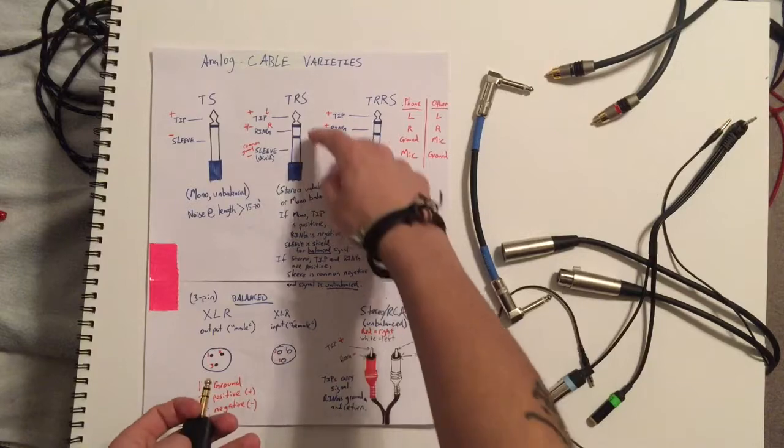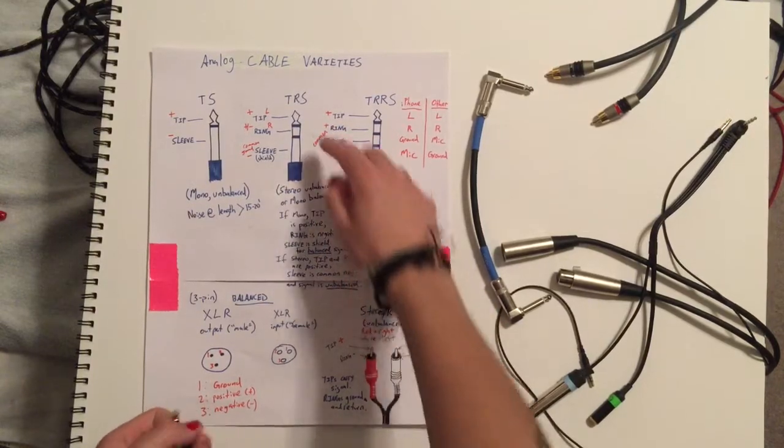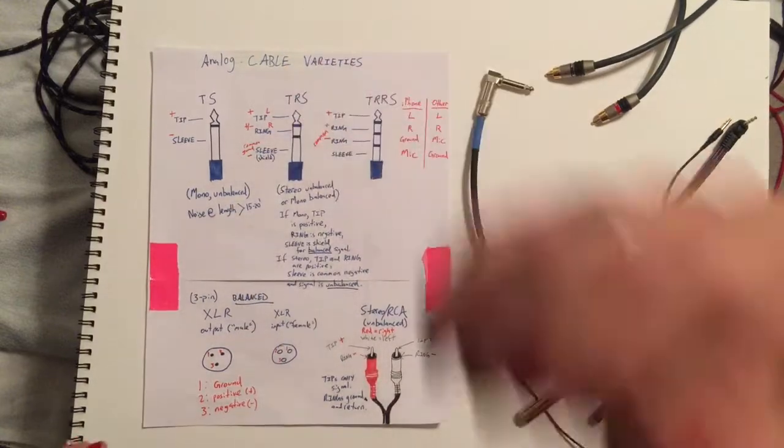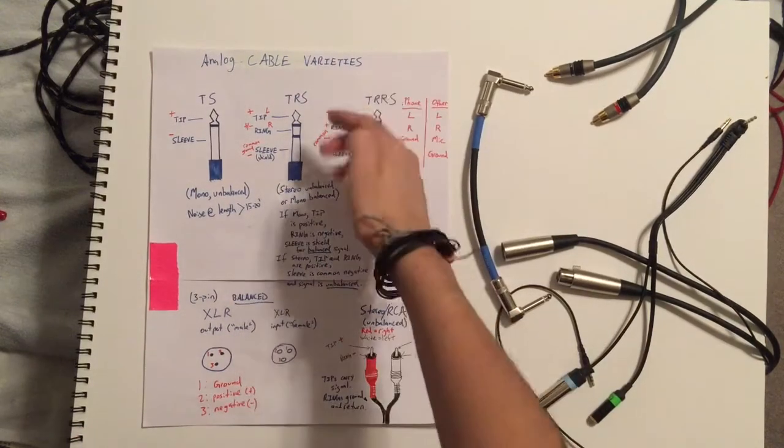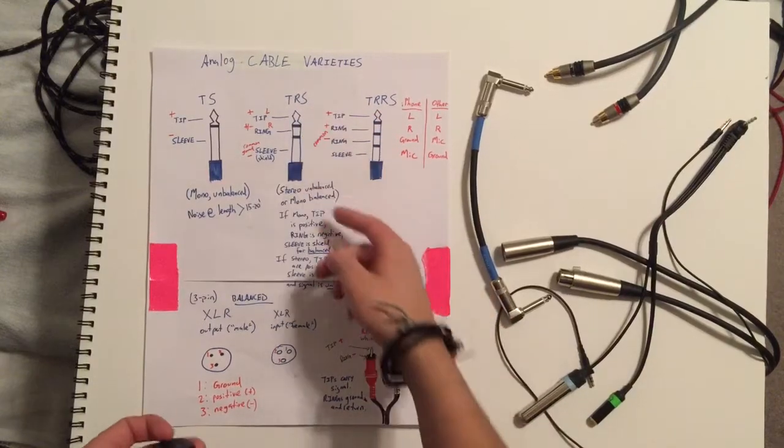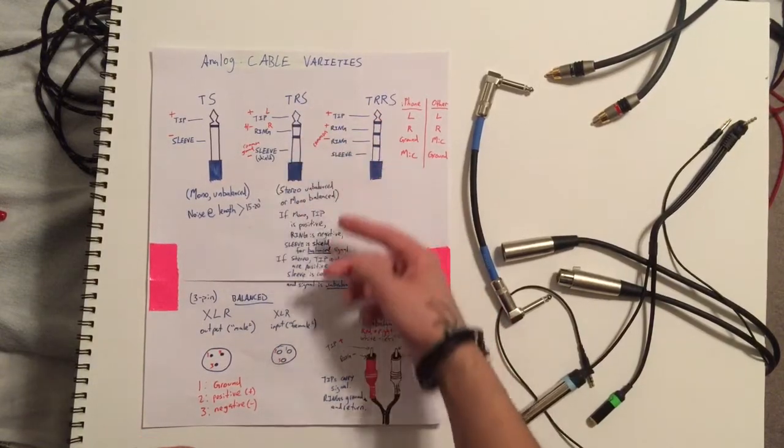If you use this cable to send a stereo signal, which you also can do, then both of the top two sections, the tip and the ring, are positive to send a signal and in that case the tip functions as the left channel, ring as the right channel, and then the sleeve functions as a common ground.